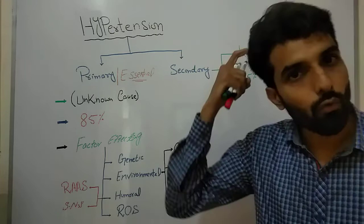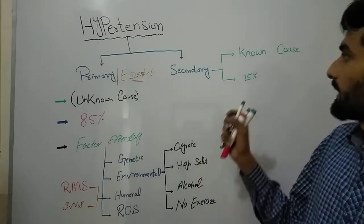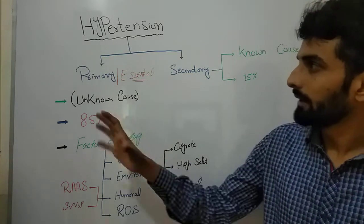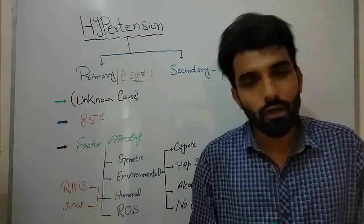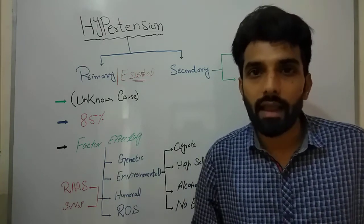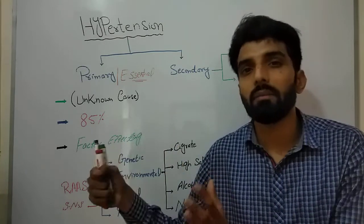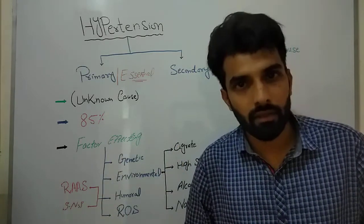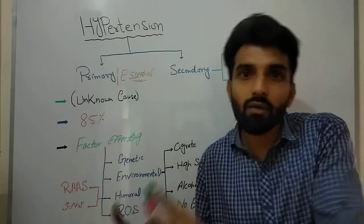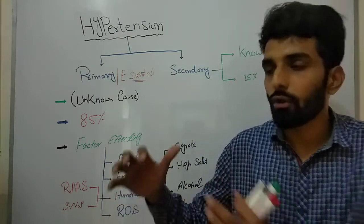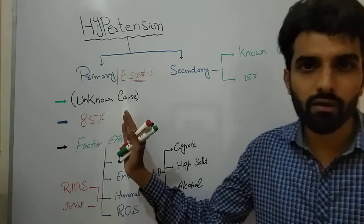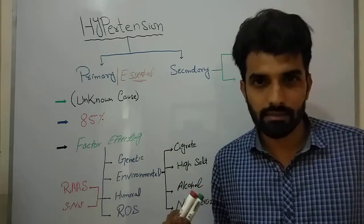Primary hypertension accounts for approximately 85% of total hypertension, while secondary hypertension accounts for just 15%. Primary hypertension is difficult for the physician to manage because the exact reason is unknown; it cannot be cured and must be managed throughout life with medication. In secondary hypertension, there is an underlying disease causing it, so curing that disease will automatically resolve the hypertension.